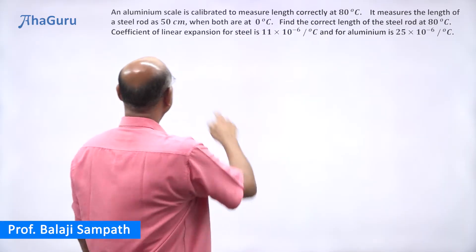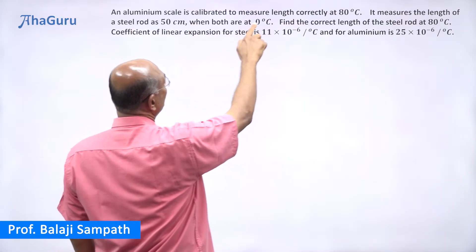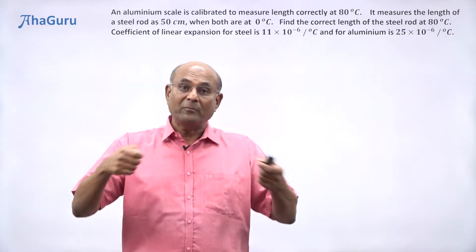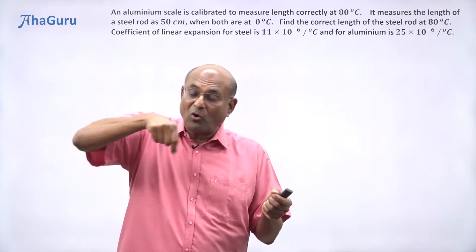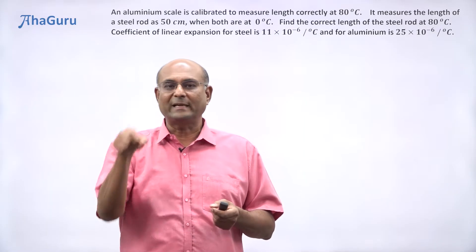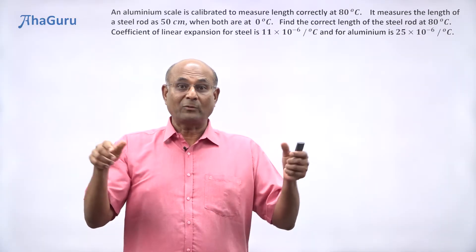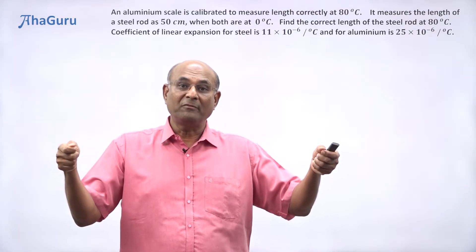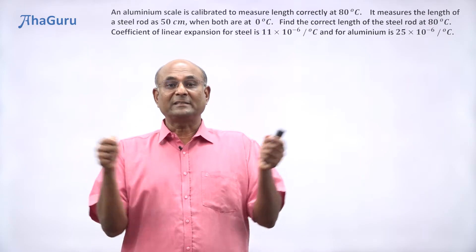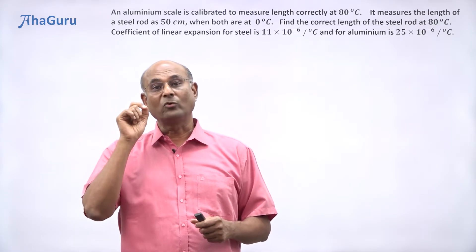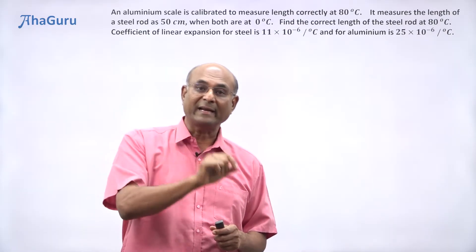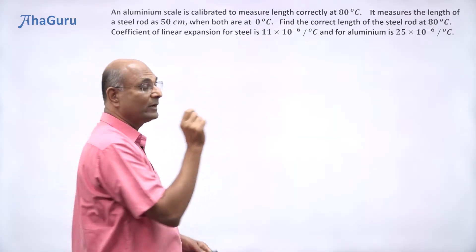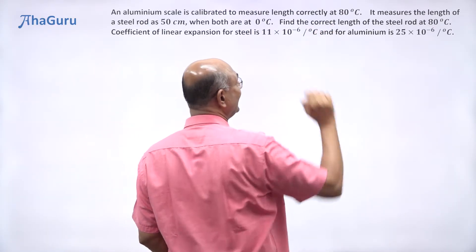Here is an interesting question. An aluminum scale is calibrated to measure length correctly at 80 degrees Celsius. What does that mean? When the aluminum rod was at 80 degrees Celsius, we put all those markings which say 1 centimeter, 2 centimeter, and so on. So that was correct at 80 degrees Celsius. But suppose the temperature reduces — the aluminum scale will shrink. When it shrinks, all the markings will get closer, which means it will no longer measure the length correctly at other temperatures. So the scale only measures length correctly at 80 degrees Celsius.